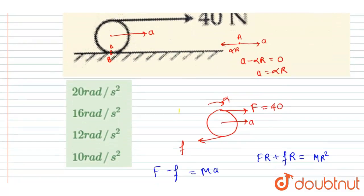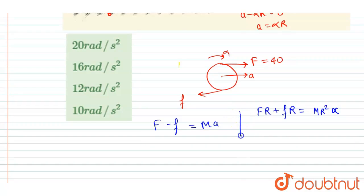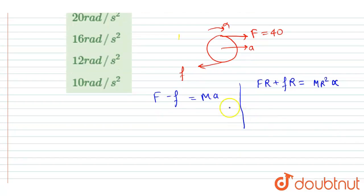So I will write F*r plus f*r is equals to mr² (since the cylinder is hollow) into alpha, right? So this will be the expression for the torque. This is the torque, that is equals to I*alpha, right?